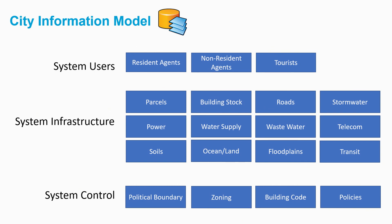We also have to include infrastructure. These people are using the infrastructure and resources of the city, and because we wanted to establish the impacts to the people, we needed to model all of the infrastructure together: parcels, building stock, roads, stormwater, power systems, water supply systems, and so on. Anything that people use, we need to have in our model.